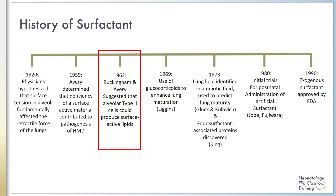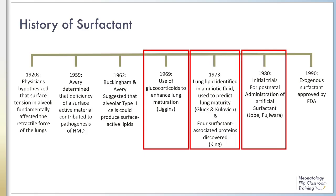Sue Buckingham proposed that alveolar type 2 cells could be the producers of surface-active lipids, as they contained osmiophilic lamellar inclusions. These inclusions were demonstrated to improve the capacity of lung extracts to lower surface tension. Subsequent researchers were able to characterize surfactant further.